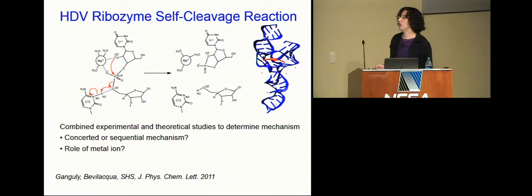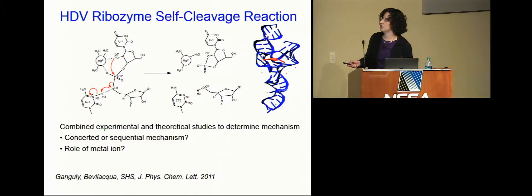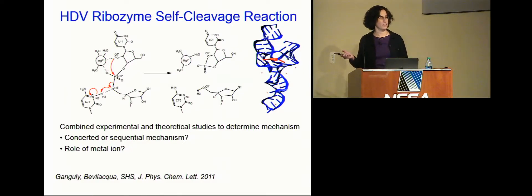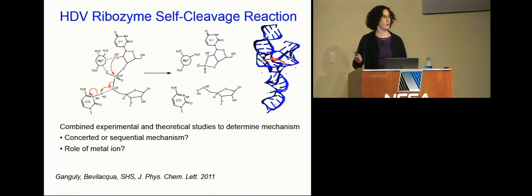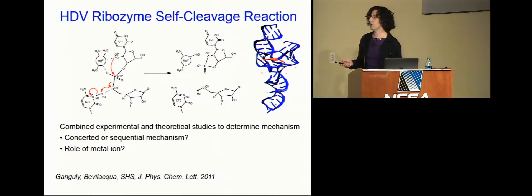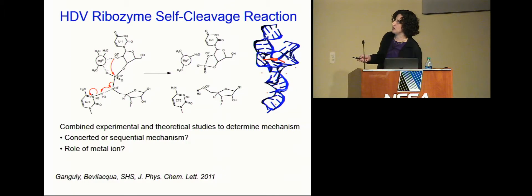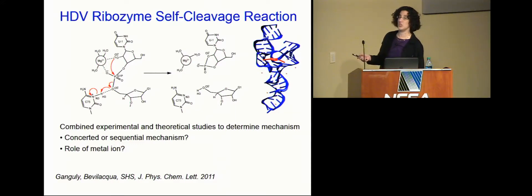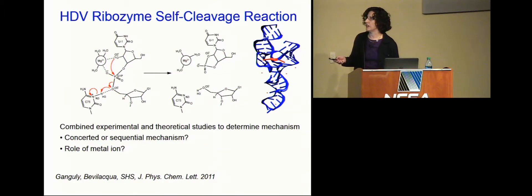The key questions we want to answer: first, is the mechanism concerted or sequential? Are all the bond-breaking and bond-forming steps happening at once, or does one happen first, then another? This can't be probed experimentally, so that's where theory really can play a role. Second, what is the role of the magnesium ion at the active site? Experimentally they know it's very important — without magnesium it's much slower — but they don't know why. Different metals give different experimental results, and theory can help explain this.